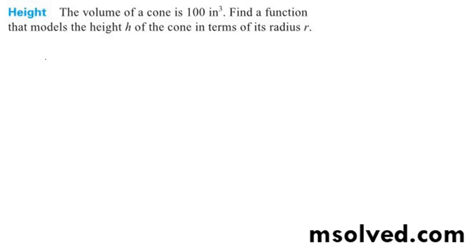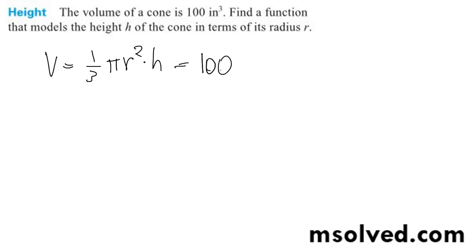Volume of a cone. The volume of a cone equals one-third pi r squared times the height. We want to find the height in terms of h, and the volume in this case is equal to 100 inches cubed.